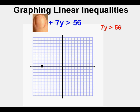Now we solve for the y-intercept by covering the x term, leaving 7y is not equal to but greater than 56. Dividing both sides by 7 gives y is greater than 8. Did we divide by a negative number to solve for y? No — so we don't have to switch the sign. Now we mark the y-intercept at 8.